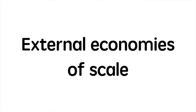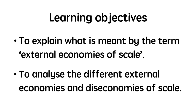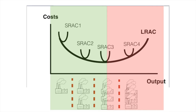In this video we'll learn about external economies of scale. We'll examine what's meant by the term external economies of scale and then look at specific economies and diseconomies. In the previous video we saw that economies of scale occur as a firm expands its production capacity. Beyond the minimum efficient scale, average costs are constant or start to rise due to diseconomies of scale. In this video we're going to look at external economies of scale, which have a different effect on the long run average cost curve.